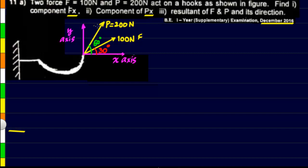First, the component of F in x direction, then the component of P in x direction, and also the resultant of both F and P and the direction of the resultant.